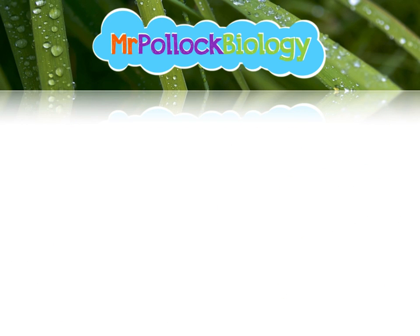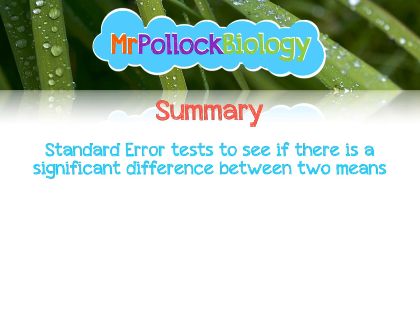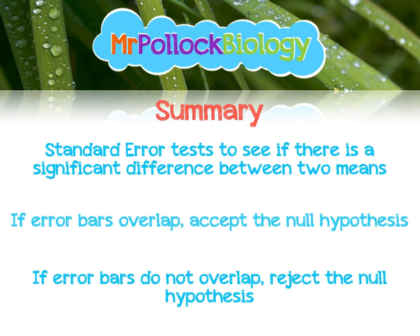To summarize: standard error tests to see if there's a significant difference between two means. If the error bars overlap, we accept the null hypothesis; if they do not overlap, we reject the null hypothesis. I hope that's been useful. Thanks very much for watching — remember to like, comment, and subscribe. I've also done videos on how to calculate standard deviation by hand and on the chi-squared test, so be sure to check those out. Thanks very much, guys. Take care.